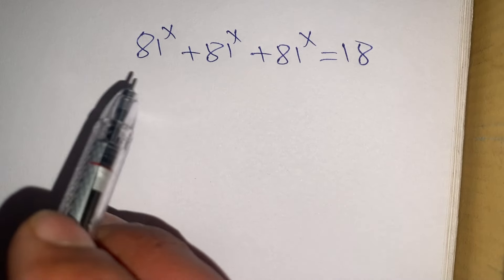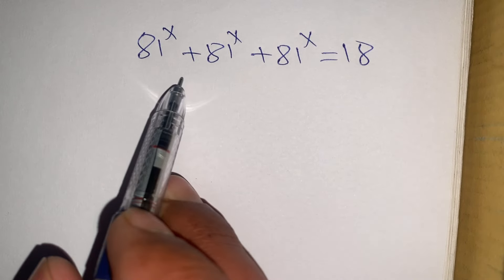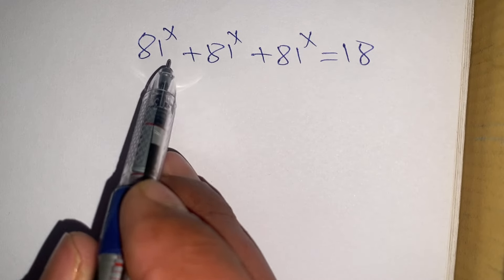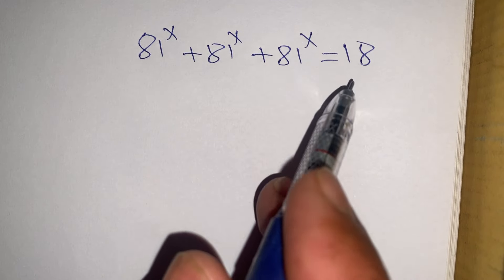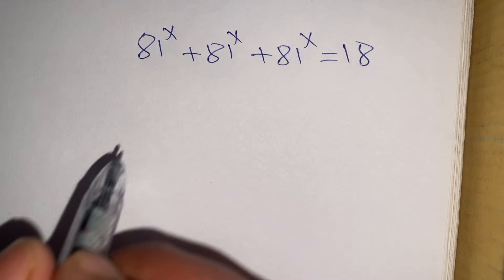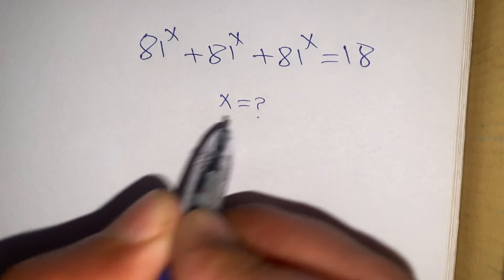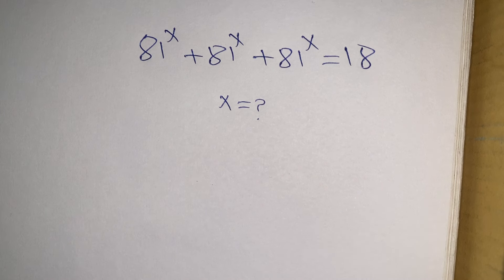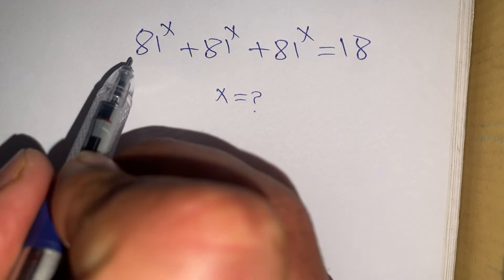Hello everyone. In today's video we are going to solve this exponential equation: 81 to the power x plus 81 to the power x plus 81 to the power x, equal to 18. We solve for x, meaning we have to find its roots.